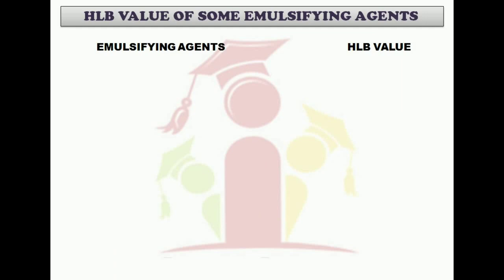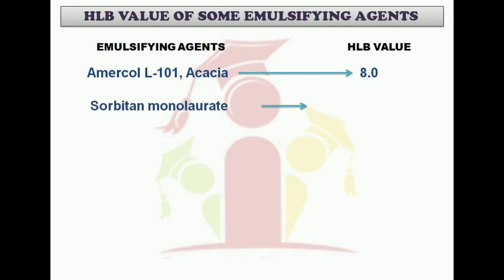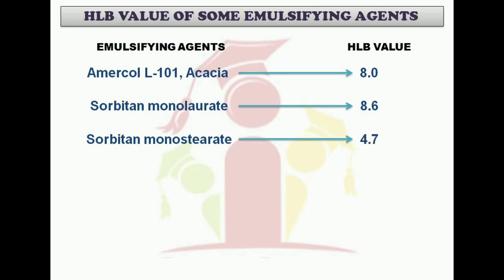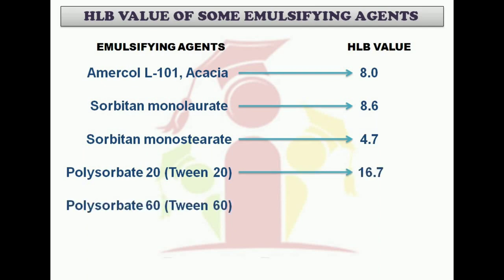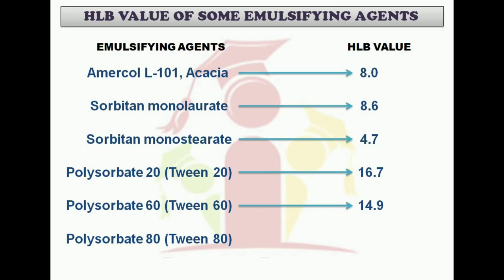Here are some important HLB values of emulsifying agents — these are important in every exam, and the questions at the end of this video relate to this section. First, Amerchol or L101 acacia has an HLB value of 8. Sorbitan monolaurate has a value of 8.6. Sorbitan monostearate has a value of 4.7. Polysorbate 20 or Tween 20 has the HLB value of 16.7. Polysorbate 60 or Tween 60 has the HLB value of 14.9.